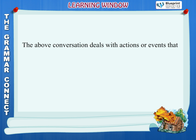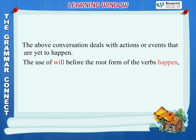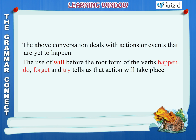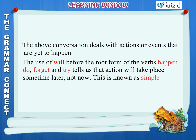The above conversation deals with actions or events that are yet to happen. The use of 'will' before the root form of the verbs — happen, do, forget, and try — tells us that the action will take place sometime later, not now. This is known as Simple Future Tense.